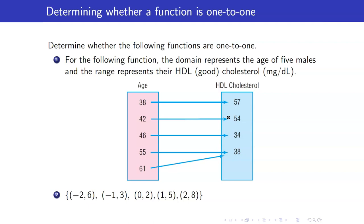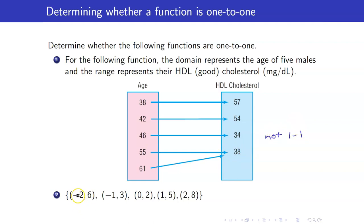For the first one, our function is represented as a map. Notice that 55 and 61 went to the same element in the range. So therefore, this is not one-to-one.